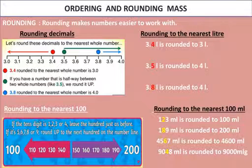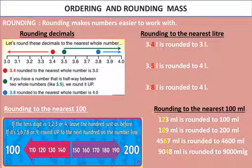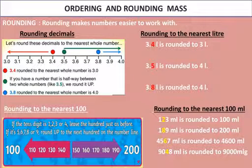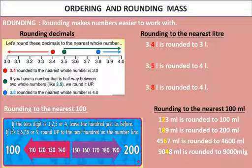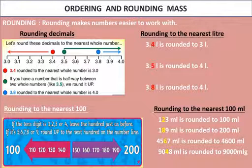189 milliliter is rounded to 200 ml because the tens place is 8, which is more than 5, so we round up. For a four-digit number like 4567: 567 falls between 500 and 600, and the tens place is 6, so we round up — 567 rounds to 600, making 4567 ml rounded to 4600 ml.